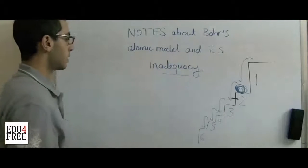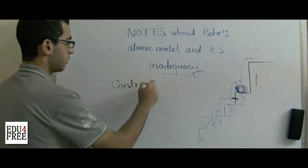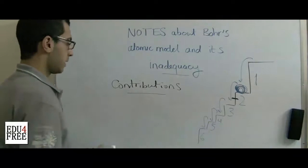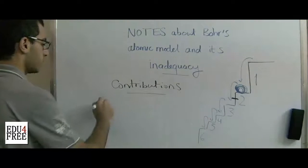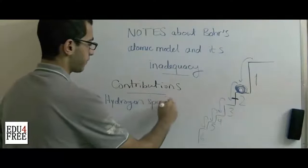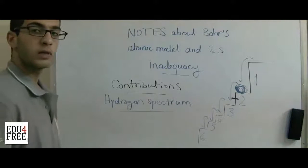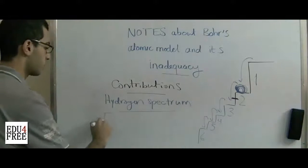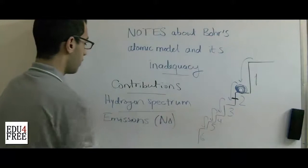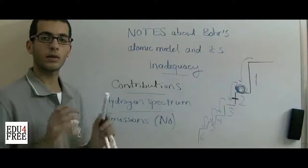Bohr's atomic model had a lot of useful contributions in finding the atomic structure because it explained the hydrogen spectrum and it refused the idea of emission of radiations. No emissions of radiation while the electrons orbit the nucleus in their ground state.